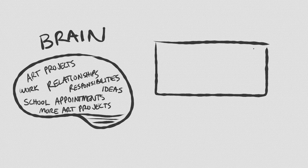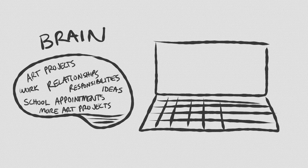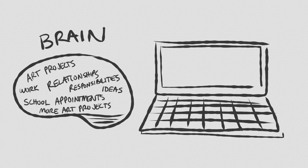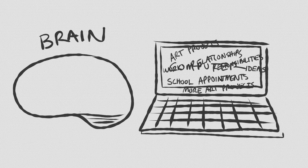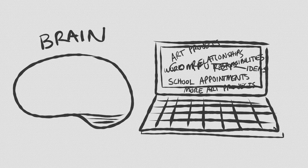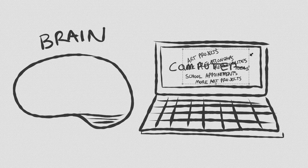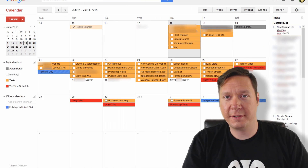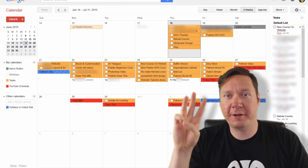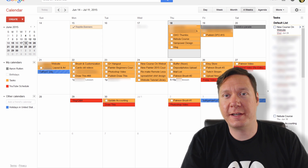For me the best way to do this is to not necessarily write something down on paper, because then I just end up with all these pieces of paper that get lost. I like to make use of my computer to keep track of all this stuff, so I'm going to show you three different programs that I use all the time.